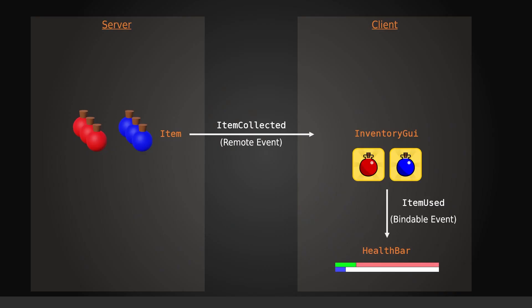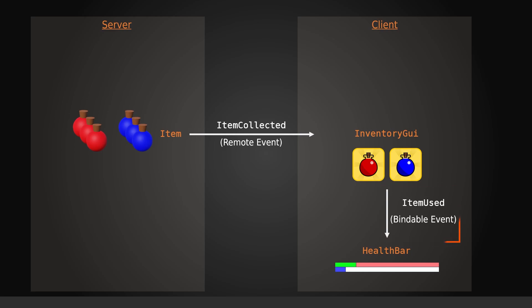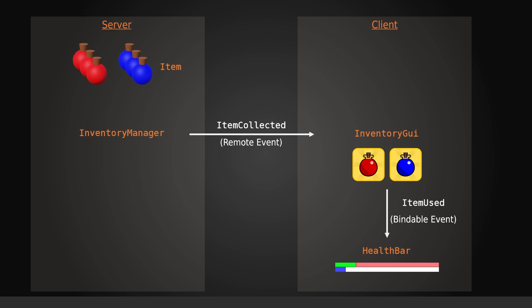If you remember, we were using a structure like this. When a player touched them, the items let the inventory GUI know with a remote event called item collected, and when that event was invoked, inventory GUI would reflect the updated inventory by updating the user interface — the count on the icons, or creating the icons if there weren't any. Now we'll use a new script named inventory manager and we'll convert item collected to a bindable event between the item and inventory manager. We'll also need another remote event from inventory manager to let inventory GUI know that the inventory is updated, so we'll have a remote event called inventory updated for that.